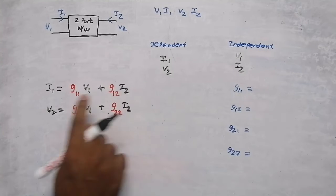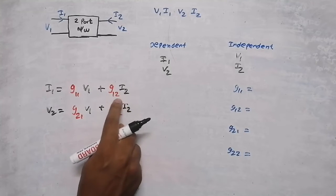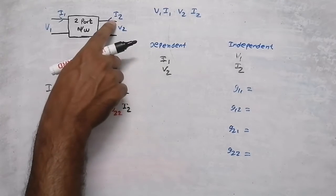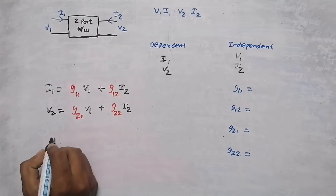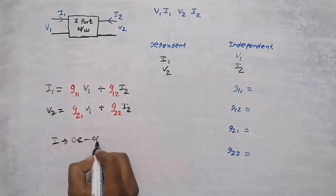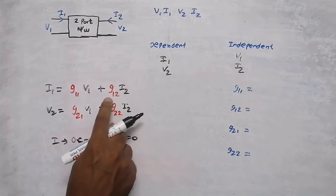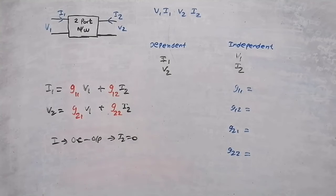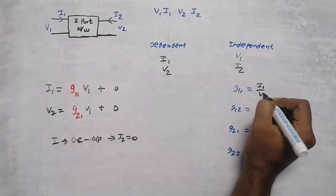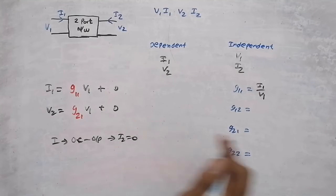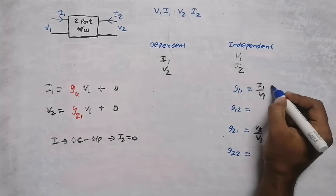For finding g11, i2 should be zero. To get i2 equal to zero, we need to open circuit the output port. When we open circuit the output port, i2 equals zero, making those terms zero. Therefore, g11 equals i1 divided by v1, and g21 equals v2 divided by v1, under the condition that i2 equals zero.